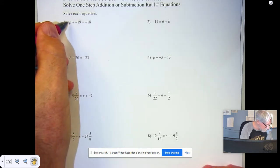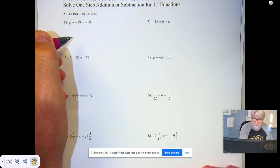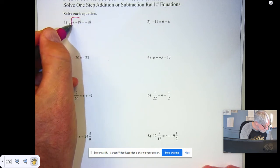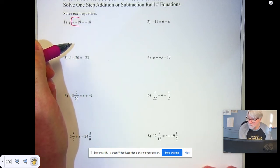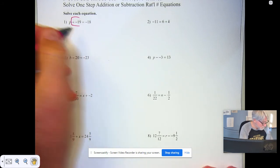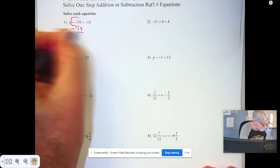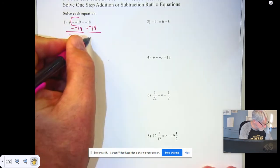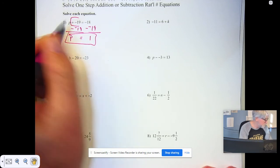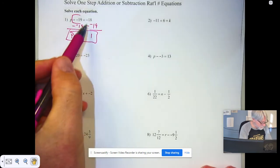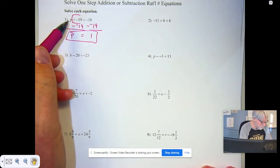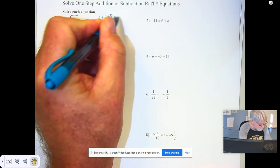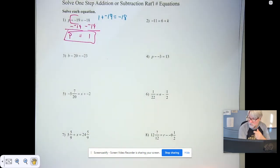First thing we're going to do is identify the variable. You notice we get the letter P in this first one. After we have identified the variable, then we gotta look at the operation. You see we are adding negative 19. The opposite of adding is subtracting, so if we subtract negative 19 from here we'll get P. If we subtract negative 19 from here we get one. So use your calculators, do the work. Negative 18 minus negative 19 is one, and if you put it back in the original equation, one plus negative 19 does in fact equal negative 18, so it checks.